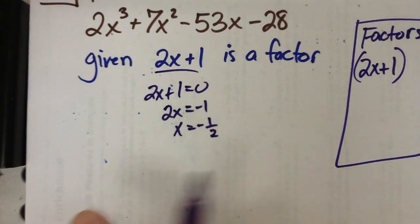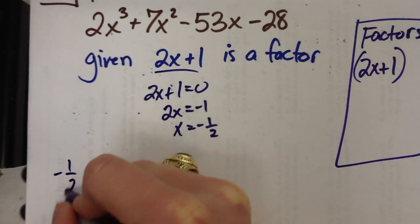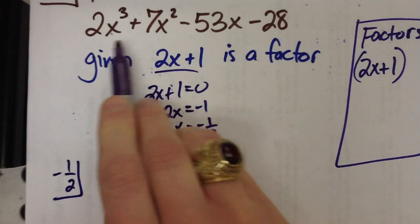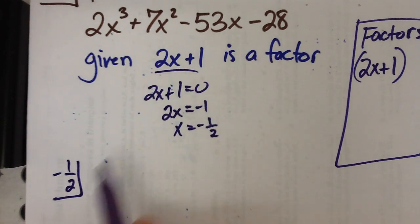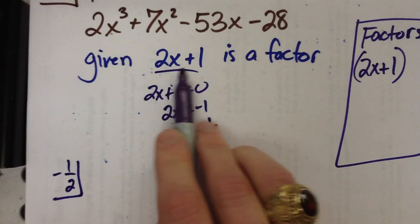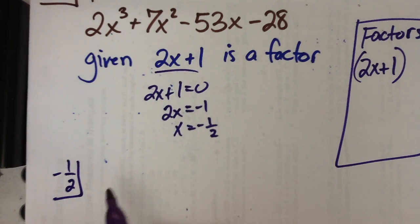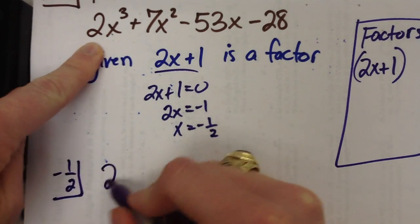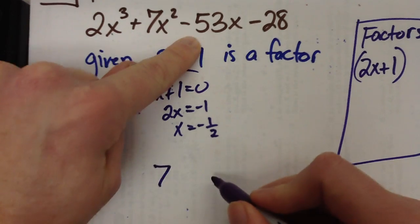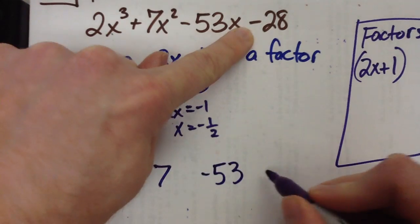Let me try to keep the original polynomial here. So we are dividing the polynomial by 2x plus 1. We're going to do it through synthetic division. Put your coefficients down. 2, 7, negative 53, negative 28.